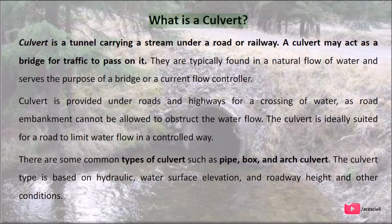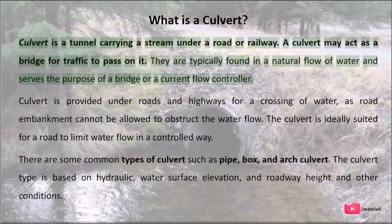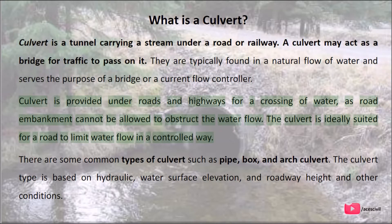A culvert is a tunnel carrying a stream under a road or railway. A culvert may act as a bridge for traffic to pass on it. They are typically found in a natural flow of water and serve the purpose of a bridge or a flow controller. Culverts are provided under roads and highways for the crossing of water, as road embankments cannot be allowed to obstruct water flow. The culvert is ideally suited for a road to limit water flow in a controlled way.